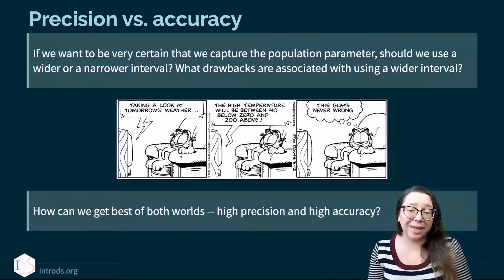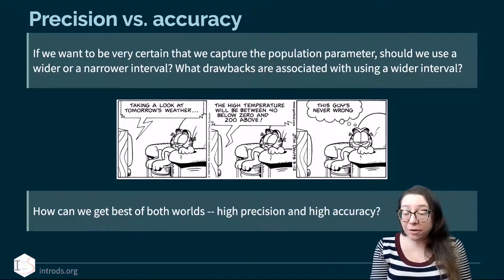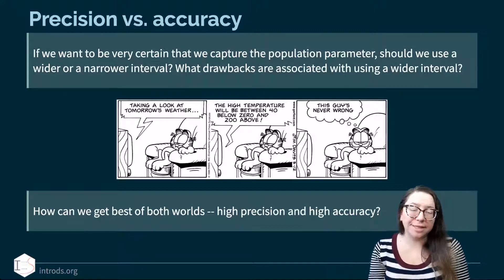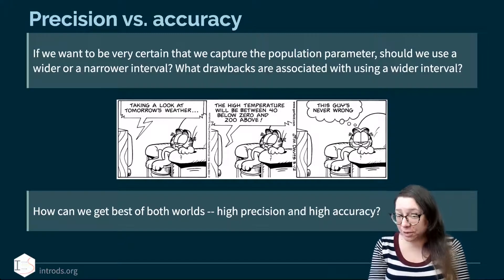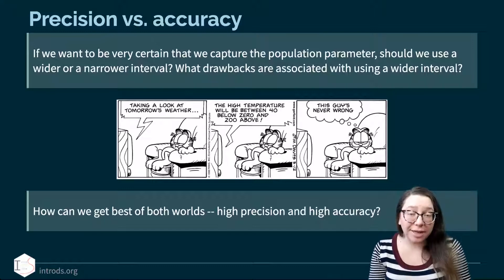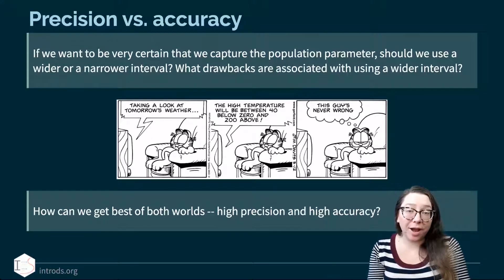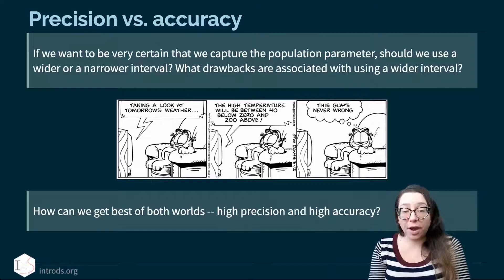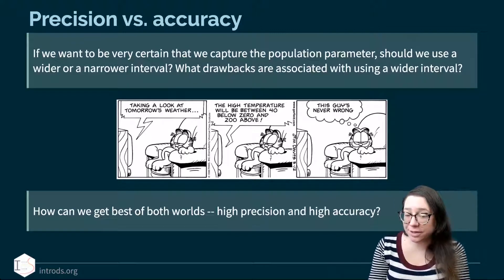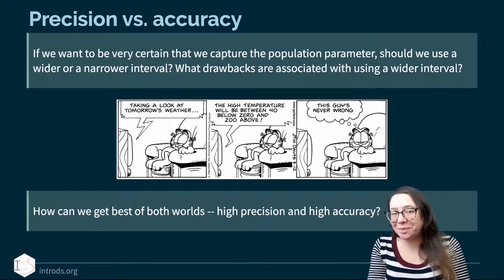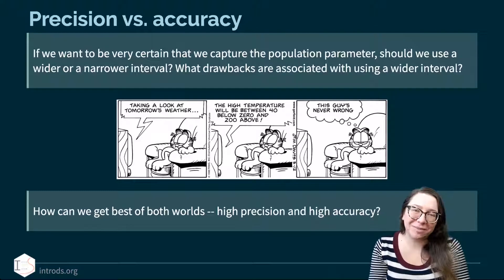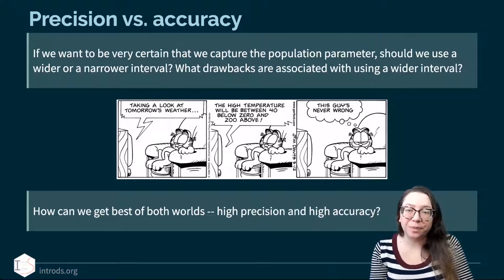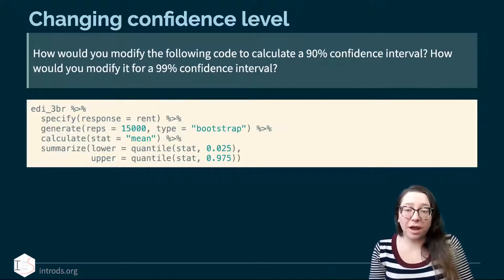To get both high precision and high accuracy, what we really need is a larger sample size — assuming you have a good quality sample to begin with. More data means you can provide estimates with higher precision and higher accuracy. It sounds simple, but getting more data is not always trivial.